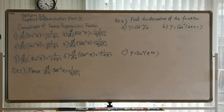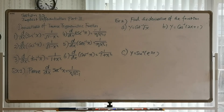The same pattern holds for inverse tangent and inverse cotangent — their derivatives have similar structures, 1 over the quantity 1 plus x squared, with one positive and one negative. Similarly, inverse secant and inverse cosecant are quite similar: secant is positive while inverse cosecant is negative.